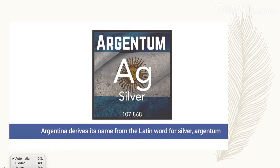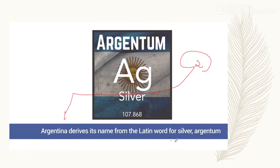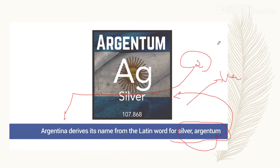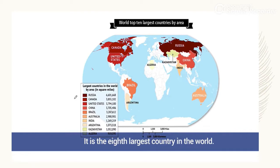اب ہم Argentina کی بات کریں۔ Argentina بھی بہت بار news میں رہتا ہے، اسی لیے آج ہم Argentina کو geographically trace کریں گے۔ Argentina is mostly located in the southern half of South America and it derives its name from the Latin word for silver, that is 'Argentum'۔ Its capital is Buenos Aires اور area wise یہ 8th largest country of the world ہے۔